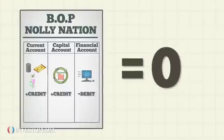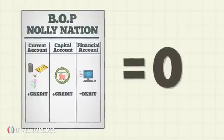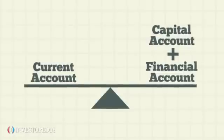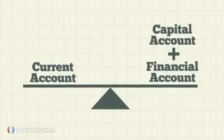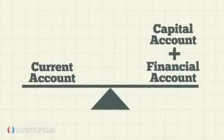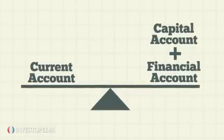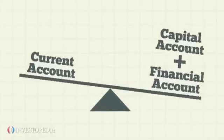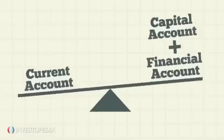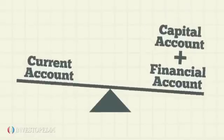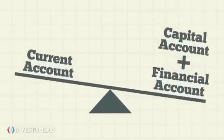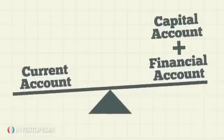A country's BOP should be zero. That is, the current account should balance with the capital plus the financial accounts. However, statistical discrepancies, differences in accounting practices, and exchange rate fluctuations mean that this rarely happens.